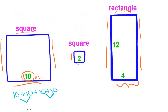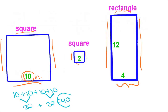To make this more simple: 10 and 10 is 20, 10 and 10 is 20, and 20 and 20 is 40. So the perimeter of the square is 40 inches. Always put your unit.